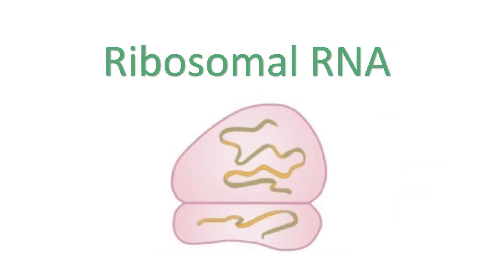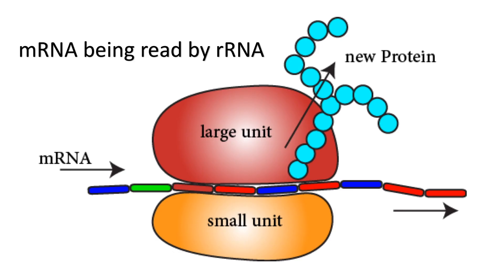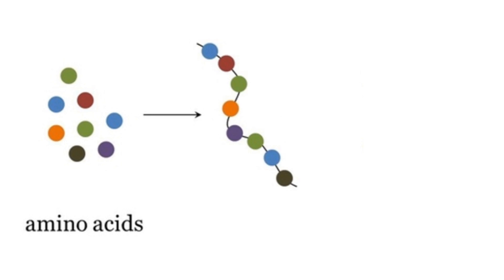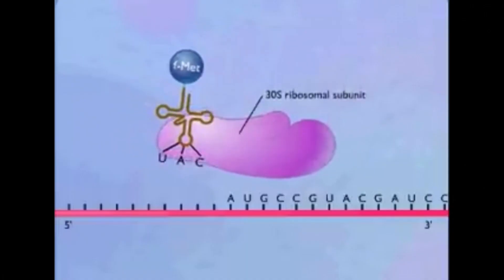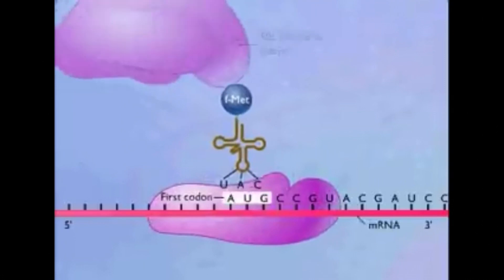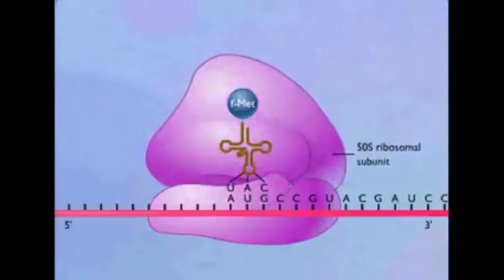rRNA stands for ribosomal RNA. As the name suggests, it is a part of ribosomes. When the ribosome gets attached to the mRNA, the rRNA reads the message encoded in the mRNA to create the correct protein chain made of the correct amino acids. Amino acids are the molecules that make up the protein chain — they are the monomers of protein molecules. These amino acids are brought to the ribosome by tRNAs, in a process called translation.